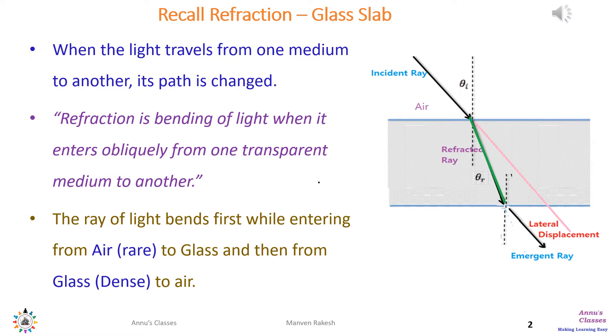If it is moving from rare medium to denser, it bends towards the normal. When it moves from denser medium to rare medium, it moves away from the normal. So refraction was defined as the bending of light when it enters obliquely from one transparent medium to another.